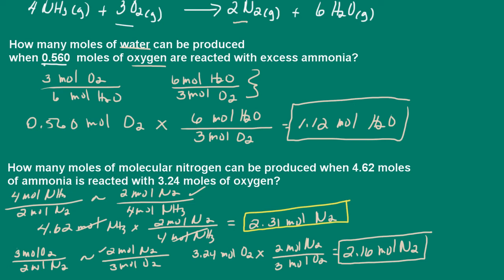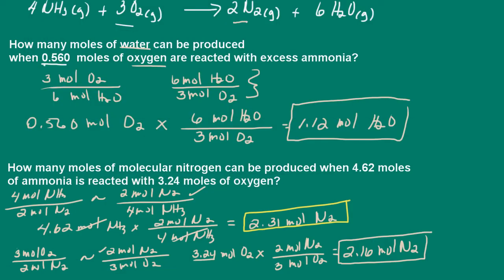So, if we take a look at the first calculation, if we react 4.62 moles of ammonia, we would end up with 2.31 moles of nitrogen. If we react 3.24 moles of oxygen, we end up with 2.16 moles of nitrogen. So in this case here, my limiting reagent is going to be my oxygen. I've only got 3.24 moles of oxygen. So I can't produce any more than 2.16 moles of nitrogen. So in order to react all of this ammonia, I would need more oxygen. So in this case, the correct answer then would be 2.16 moles of nitrogen.